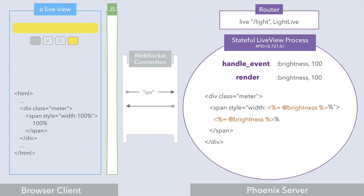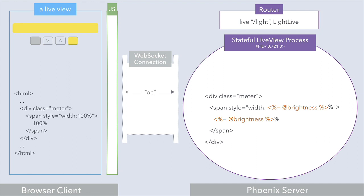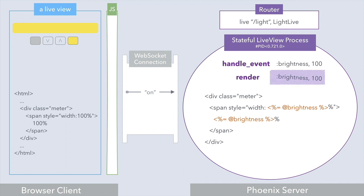What happens if we click the on button again? An on event is pushed down the WebSocket. The handle event callback assigns a brightness of 100 and render is invoked. But the live view template is smart — it tracks changes to the state and it knows that the brightness value hasn't actually changed. It was 100 before and it's 100 now. And since nothing changed, there's no need to send new dynamic values to the client. In other words, the template does diff tracking, and so the response has no static or dynamic values.